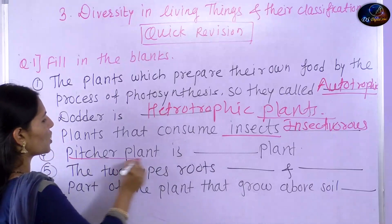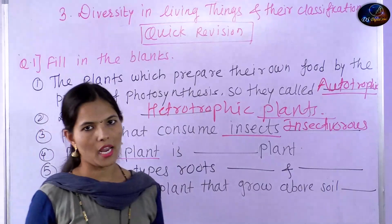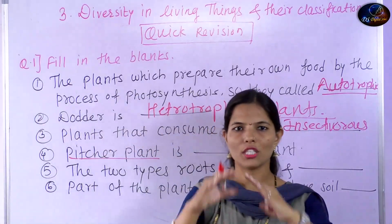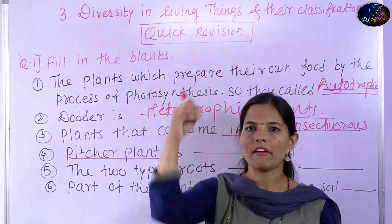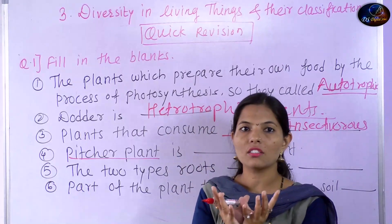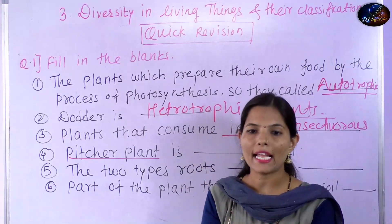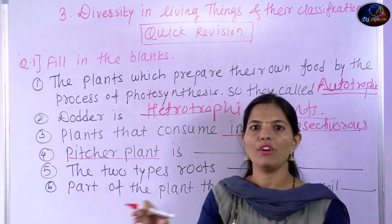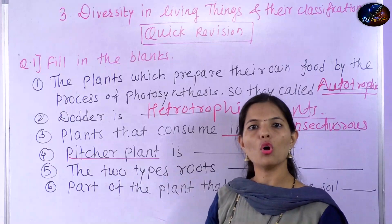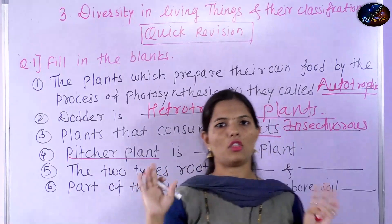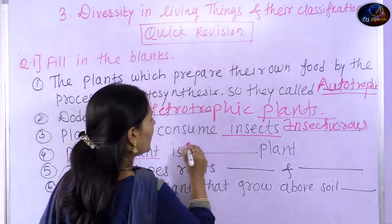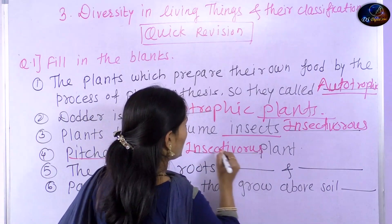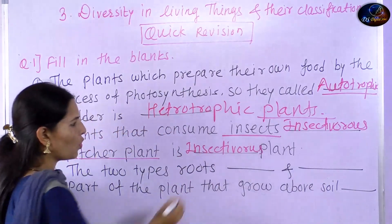The pitcher plant — pitcher means a jug-like structure. It has an attractive leaf. Insects are attracted to it and fall into the liquid inside. So pitcher plant is also an insectivorous plant. Insectivorous plants consume insects for their nutrition.